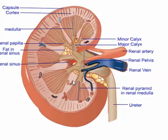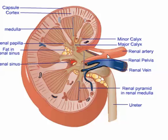Now look for the papilla. Can you see the papilla? Here are the renal papilla. And the pelvis — where is the pelvis of the kidney? Here is the renal pelvis. Here is the renal artery and the renal vein.